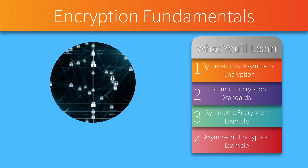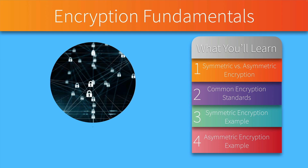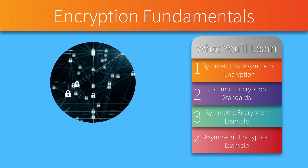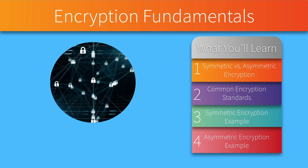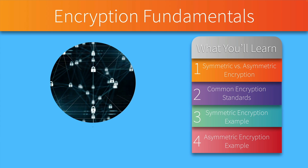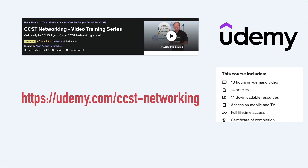Specifically, we're going to be pretending to buy something from Amazon.com, and we'll see how a certificate authority plays a role in using a digital certificate from Amazon to make sure we are really communicating with Amazon and can send our credit card information securely. This topic on encryption is one of many topics included in my CCST networking video training series available on Udemy at udemy.com/ccst-networking. Now let's jump into this excerpt from the CCST networking course.